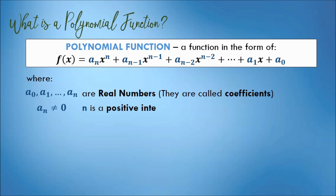But there is a condition: a_n must not be equal to 0. And n must be a positive integer, meaning all exponents must be positive integers.